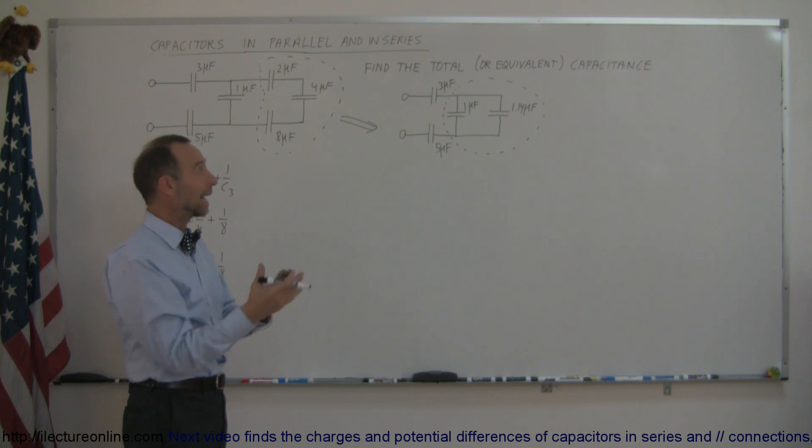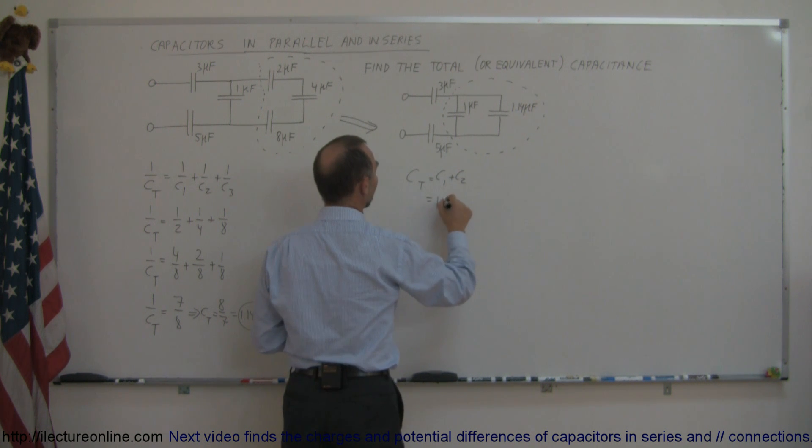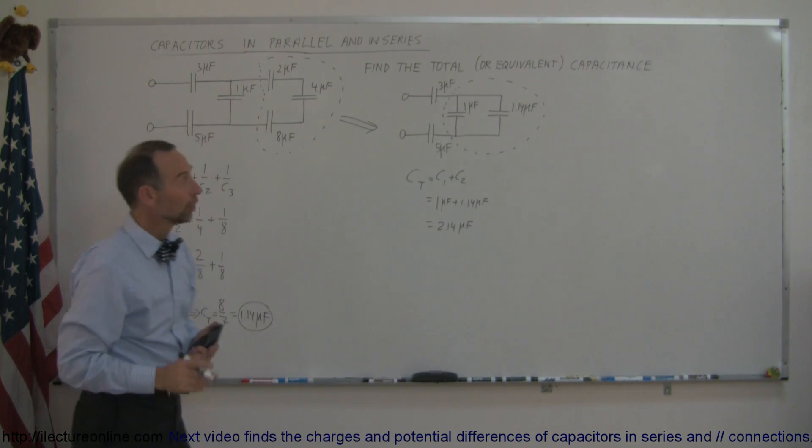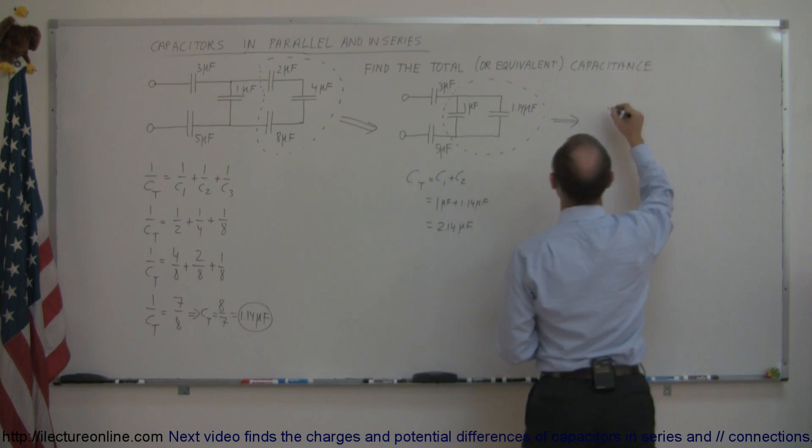If they're in parallel, we can simply add the two capacitors together. C total equals C1 plus C2, which is one microfarad plus 1.14 microfarad, so that equals 2.14 microfarad. We can replace these by a single 2.14 microfarad capacitor and redraw the circuit.